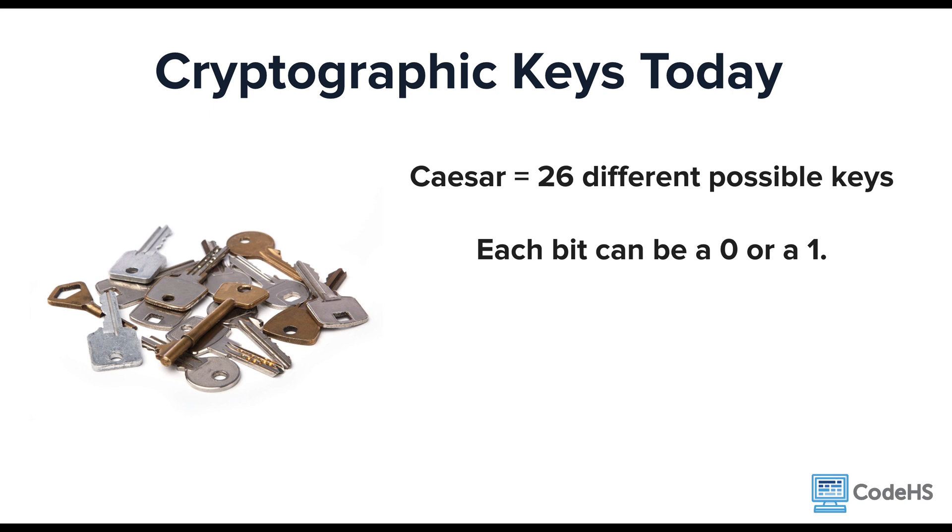For example, if you use a 10-bit key, then your key could be 10 zeros, it could be 10 ones, or it could be any combination of zeros and ones. The number of different possibilities can be represented by 2 to the n power.